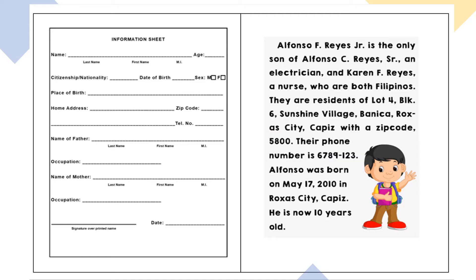Let's try. I have here an example of an information sheet for a student. We have Alfonso F. Reyes Jr., the only son of Alfonso C. Reyes Sr., an electrician, and Karen F. Reyes, a nurse, who are both Filipinos. They are residents of Lot 4, Block 6, Sunshine Village, Banica, Rojas City, Capiz, with a zip code of 5800. Their phone number is 6789123. Alfonso was born on May 17, 2010, in Rojas City, Capiz. He is now 10 years old. Please fill out the information sheet — write the name, last name first or surname, followed by the first name and middle initial.